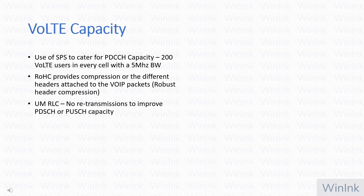Let's discuss Voice over LTE capacity. VoLTE capacity can be limited by a number of factors. First, as discussed, it can be limited by PDCCH; SPS is used to cater for PDCCH capacity. As a rule of thumb, 200 Voice over LTE users per cell with a 5 MHz bandwidth is a ballpark figure for capacity dimensioning. Robust header compression provides compression on the different headers attached to voice over IP packets. Unacknowledged mode RLC means no retransmissions in the RLC domain, which improves both physical downlink shared channel and physical uplink shared channel capacity.